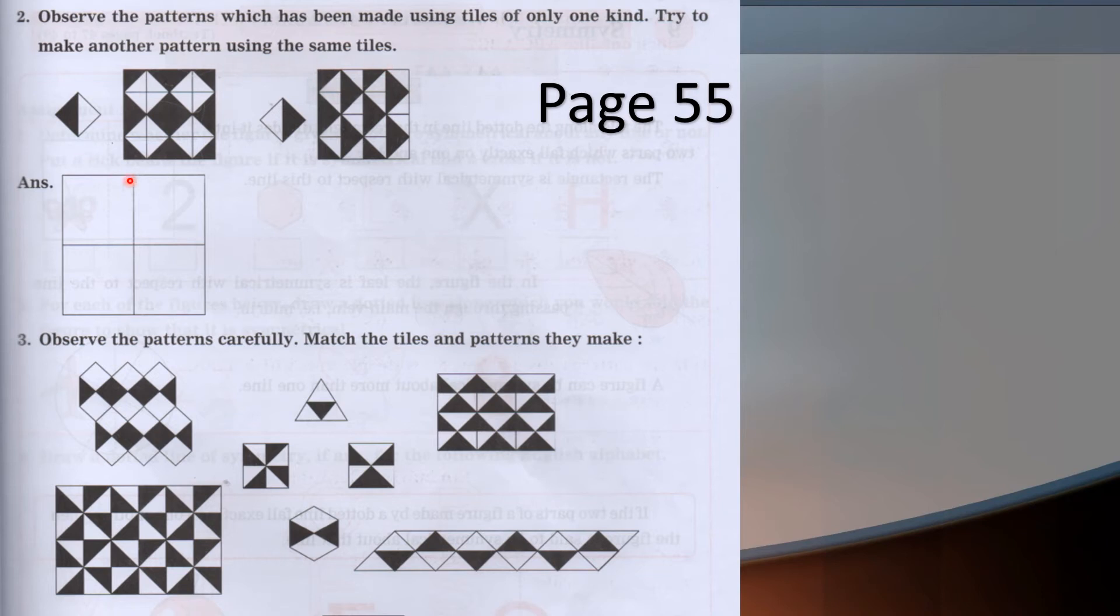Here are the tiles. These are the two tiles which are same. One side is colored and the other side is white. Even here, one side is white and the other side is colored. Using the same tiles, two different patterns have been formed.